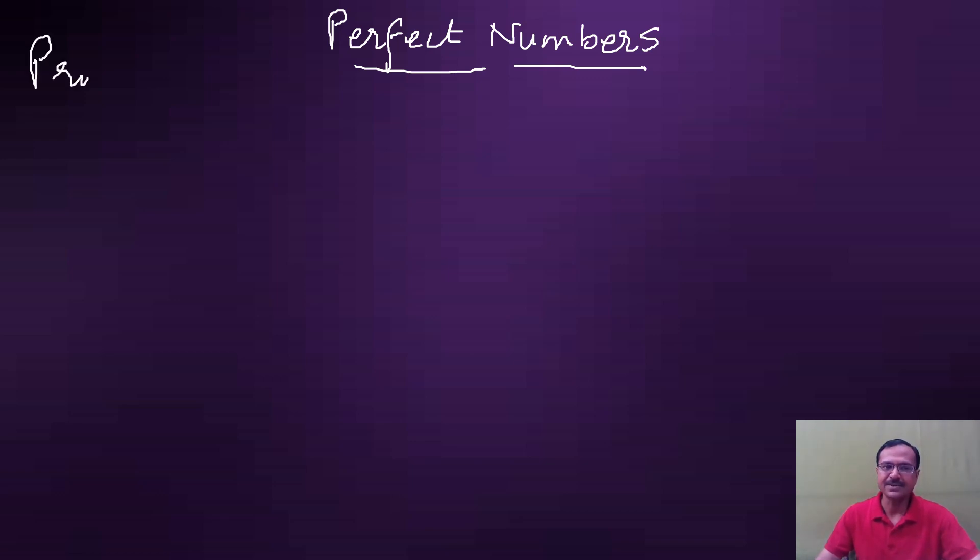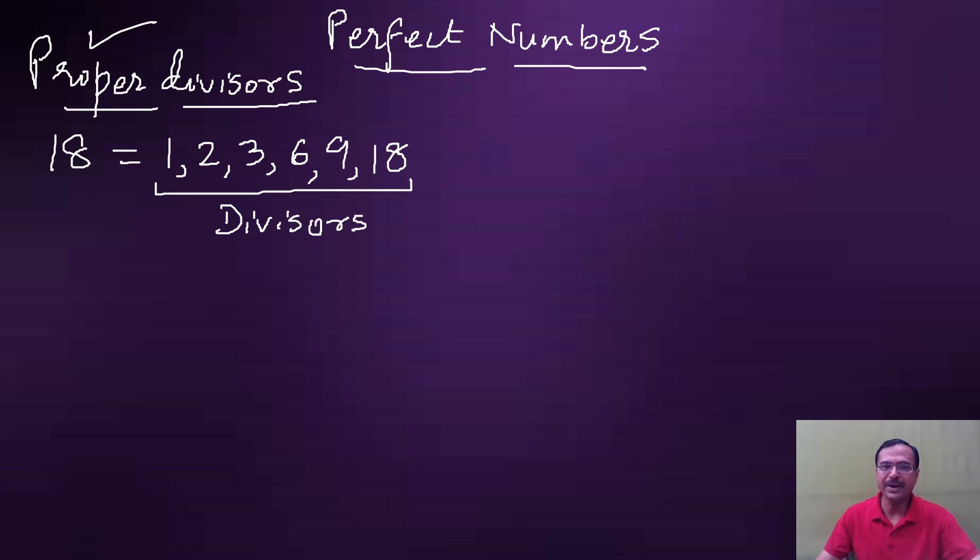For understanding perfect numbers, you need to first understand what are proper divisors. A number can have multiple divisors. For example, 18 is divisible by 1, 2, 3, 6, 9, and 18. All these are divisors of 18. But if I have to write only the proper divisors, just leave the number itself. So 1, 2, 3, 6, 9 are known as proper divisors of 18.